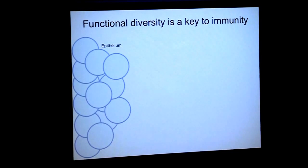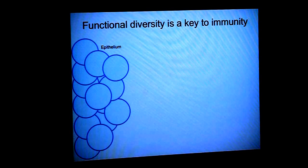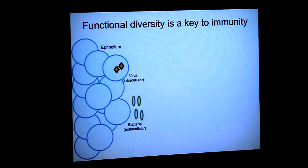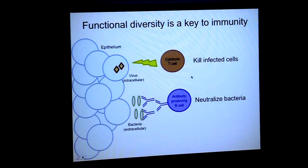I wanted to start with a more general introduction. Basically, the immune system is based on functional diversity. You have epithelium or skin and you have an infection. You can have a virus infection which is intracellular or bacterial infections which can be extracellular. The immune system has the advantage of having lots of different cell types which can kill intracellular pathogens with a cytotoxic T cell, or you can have a B cell response with antibody-producing B cells which can neutralise bacteria.